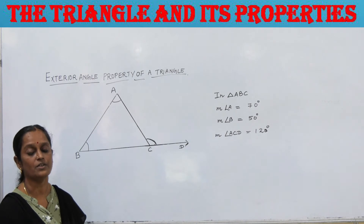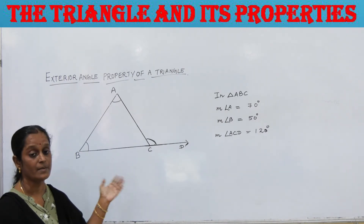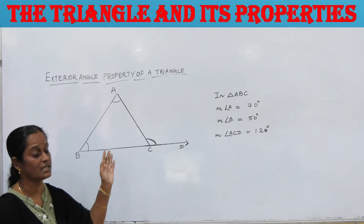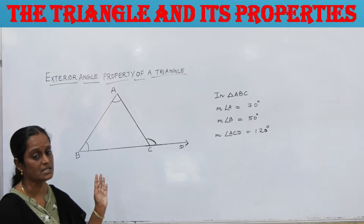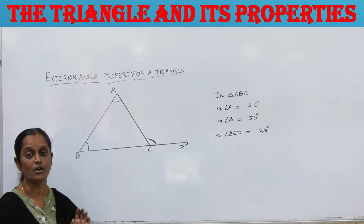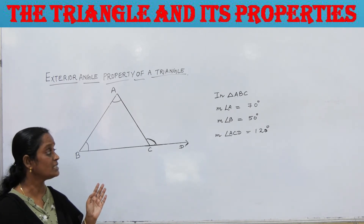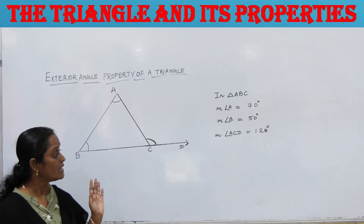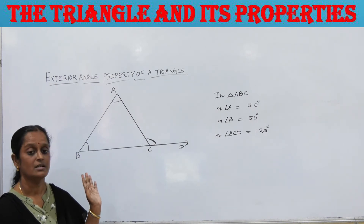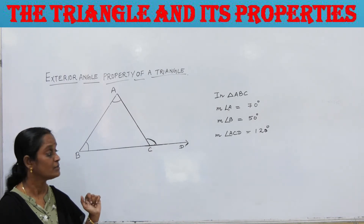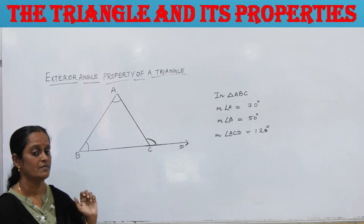You can draw many different types of triangles — acute-angle triangles, right-angle triangles, obtuse-angle triangles — and extend any of their sides to make an exterior angle. Measure the interior opposite angles and the exterior angle and verify the exterior angle property. You will always find that the exterior angle equals the sum of the interior opposite angles. If measurement is not exact, the sum will be approximately equal to the exterior angle.